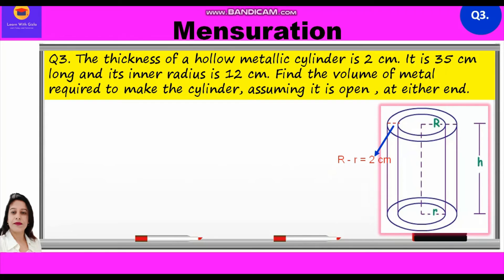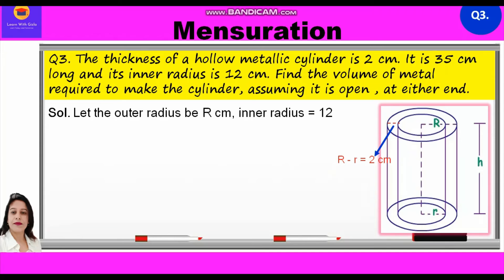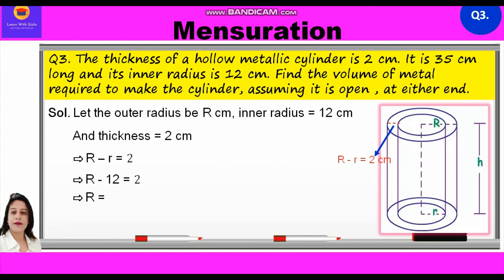Let us start with the solution. Let the outer radius be capital R centimeter. Inner radius is equal to 12 centimeter and thickness is given 2 centimeter. This implies capital R minus small r is equal to 2. Further, capital R minus 12 is equal to 2. So, capital R is equal to 2 plus 12, that is 14 centimeter. So, we can say outer radius is equal to 14 centimeter.